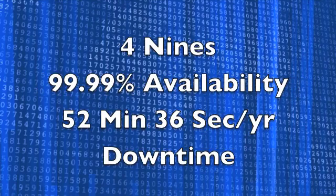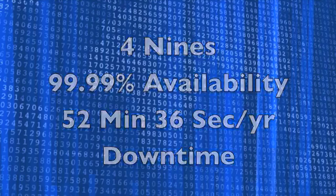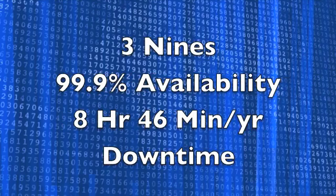Otherwise, four nines, or 99.99% availability, allows 52 minutes, 36 seconds of downtime per year. Three nines, or 99.9999% availability, allows eight hours, 46 minutes of downtime per year. That's often acceptable for many non-critical applications.